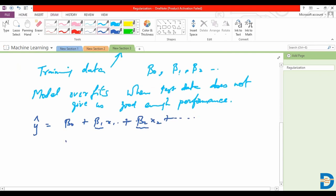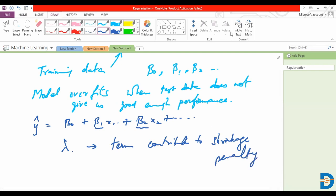Lambda becomes our term that contributes to the shrinkage penalty, and now what we try to minimize is RSS plus lambda times square of beta j, or rather the summation of the square of beta j. There would be a summation term here for all the coefficient terms.